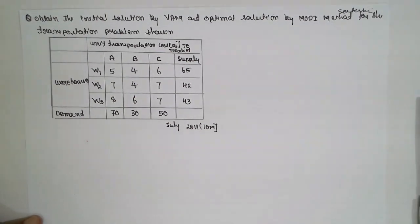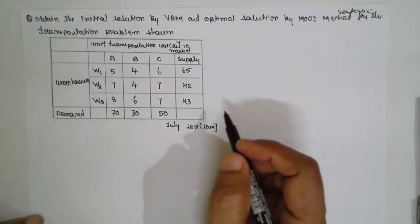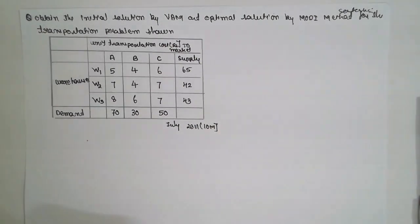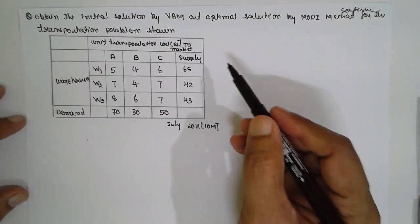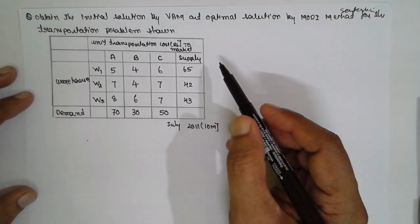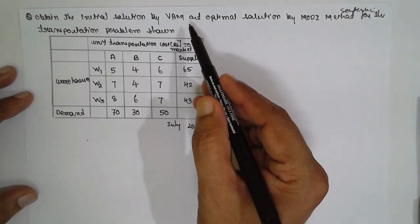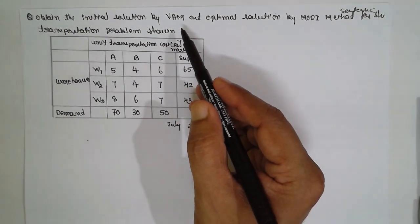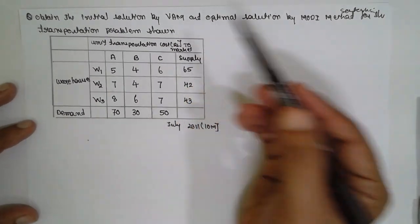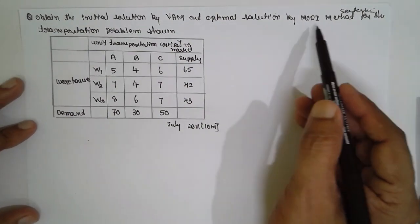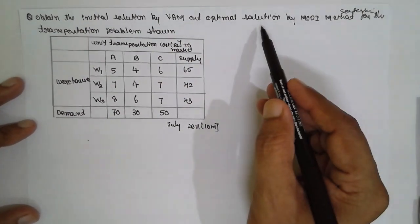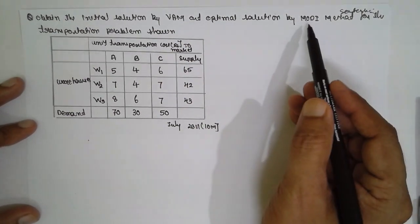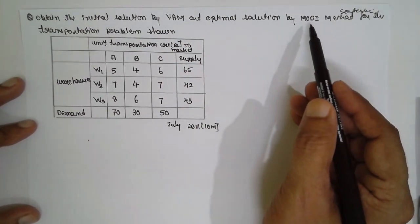I am Satosh Gayadankar. Today I am teaching you operation research — specifically the transportation problem. In the transportation problem, we will use the VAM method, also known as the Vogel's Approximation Method. Simultaneously, we are going to check the optimization solution using the MODI method.